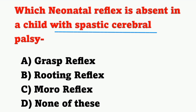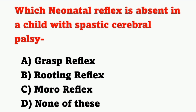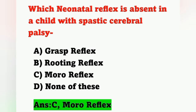First question: Which neonatal reflex is absent in a child with spastic cerebral palsy? Options: A) Grasp reflex, B) Rooting reflex, C) Moro reflex, D) None of these. Spastic cerebral palsy is the most common type of cerebral palsy, characterized by upper motor neuron muscle weakness. The reflex absent in spastic cerebral palsy is the Moro reflex. Option C is the correct answer.